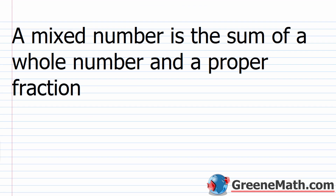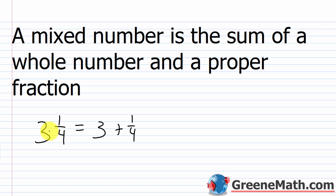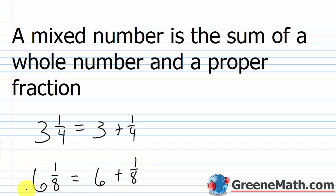The last thing we're going to learn about is called a mixed number. A mixed number is a fancy way to write an improper fraction — it's the sum of a whole number and a proper fraction. Something like three and one-fourth, which is really three plus one-fourth; we just write it this way for convenience. A lot of students think it means multiplication, but it's addition. Or six and one-eighth, which is six plus one-eighth. It's very important that you have a whole number and then a proper fraction — not a whole number and an improper fraction.